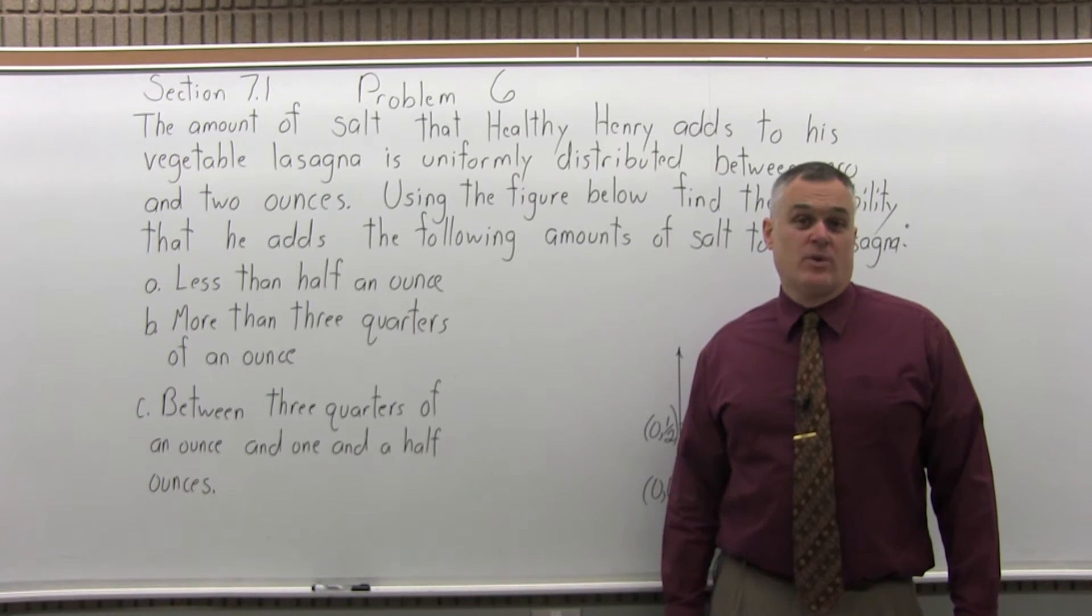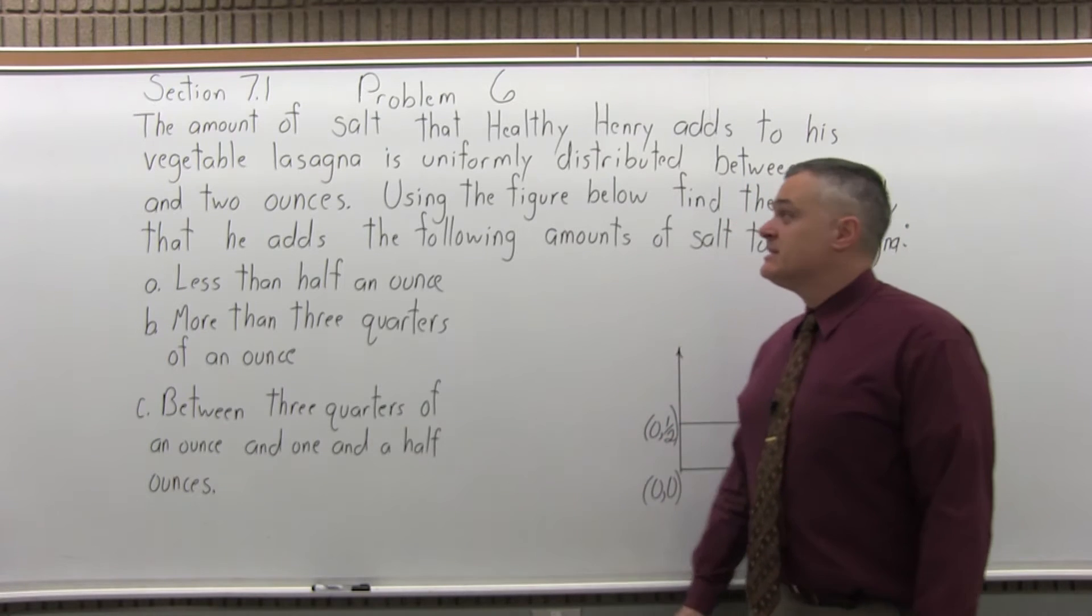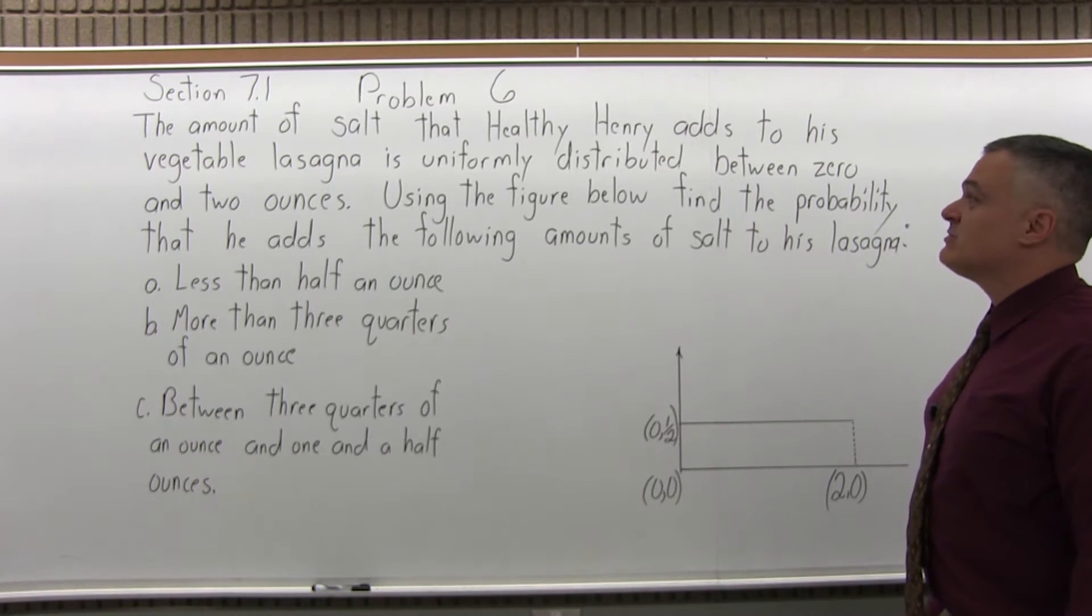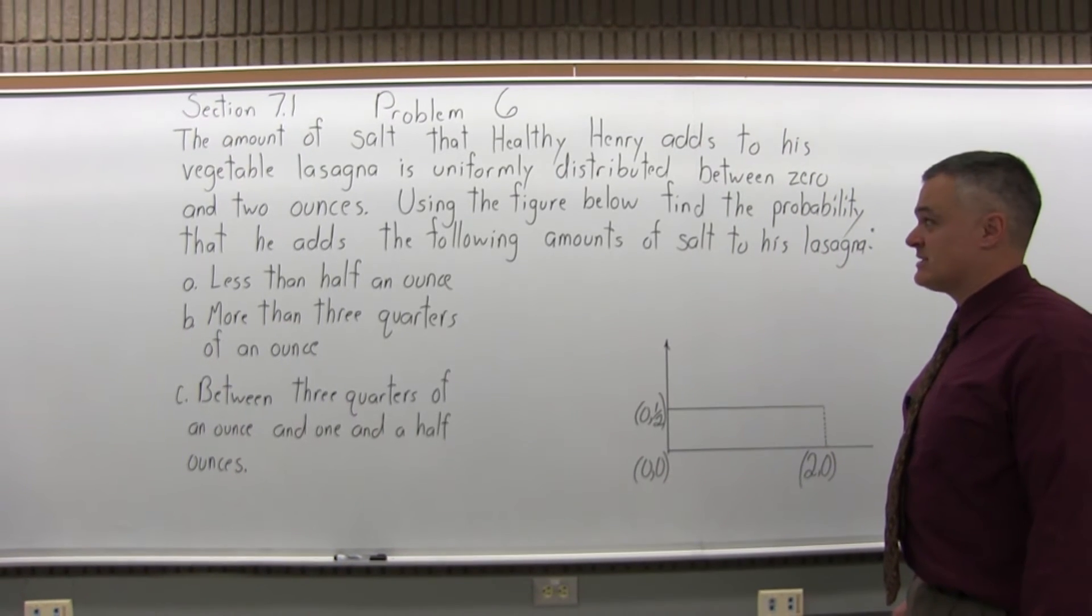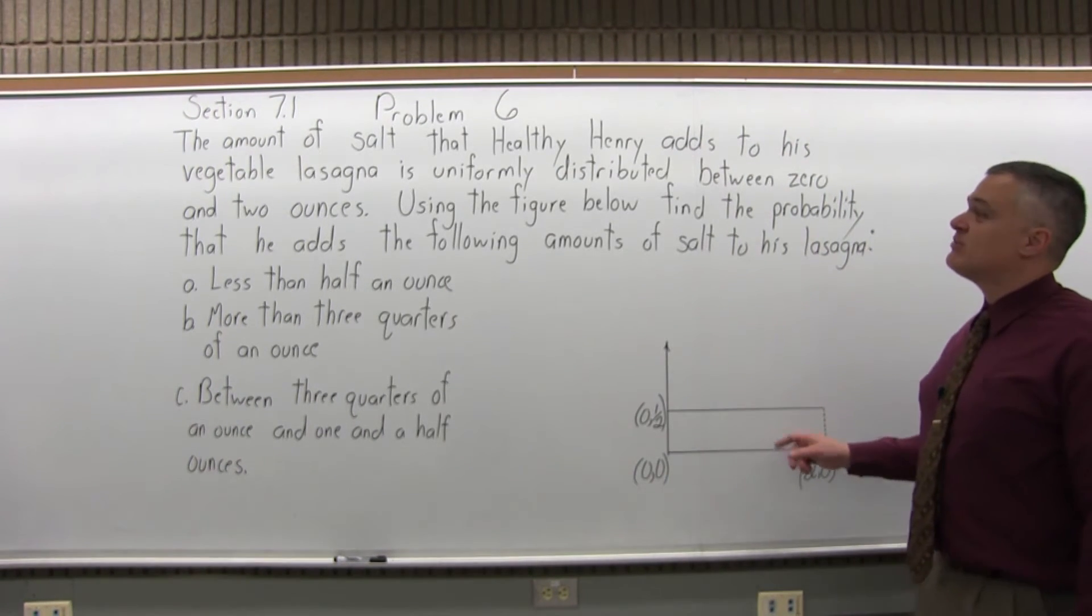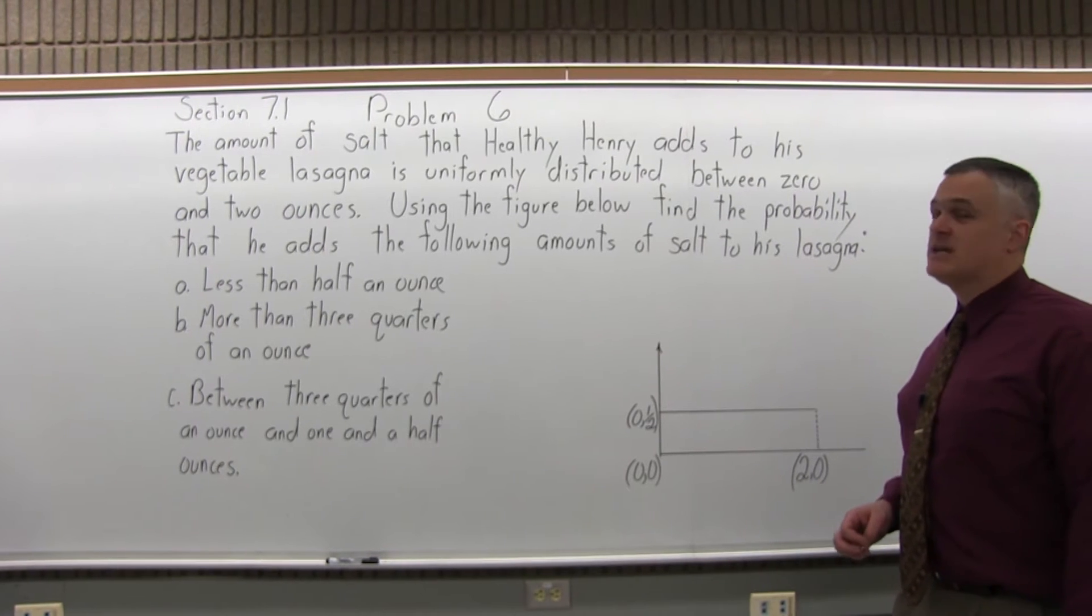This is Section 7.1, Problem 6. It says, the amount of salt that healthy Henry adds to his vegetable lasagna is uniformly distributed between 0 and 2 ounces. Use the figure below to find the probability that he adds the following amounts of salt to his lasagna.